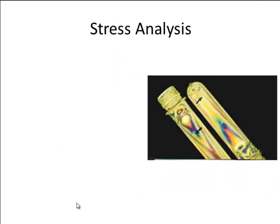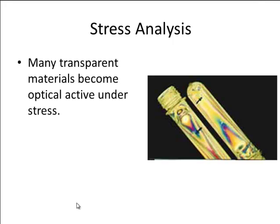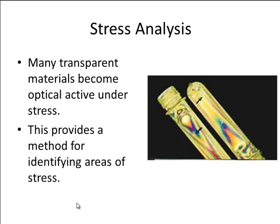Further practical uses of polarization include stress analysis. By examining how much polarized light has been affected — specifically how much the angle of polarized light has changed — when looking through certain cameras, you can identify areas which have undergone stress. Transparent materials such as glass become optically active when they undergo stress conditions, making this a useful diagnostic technique.